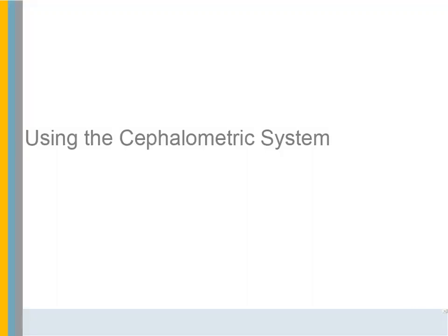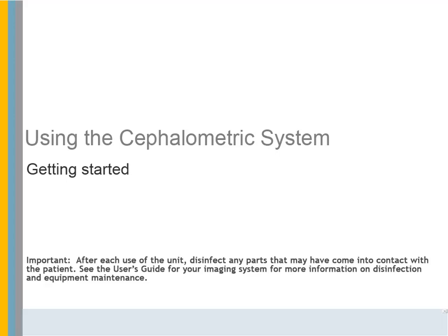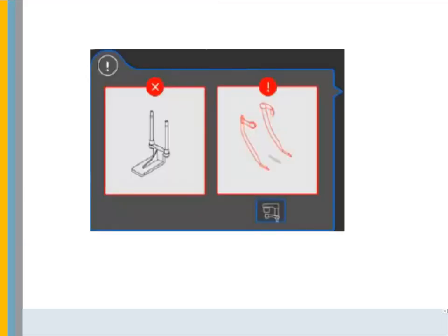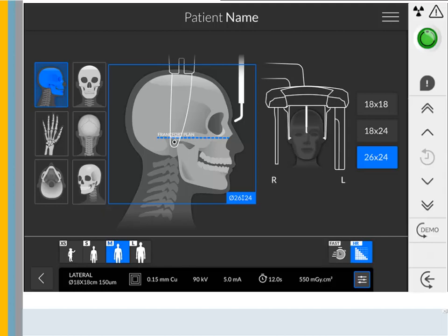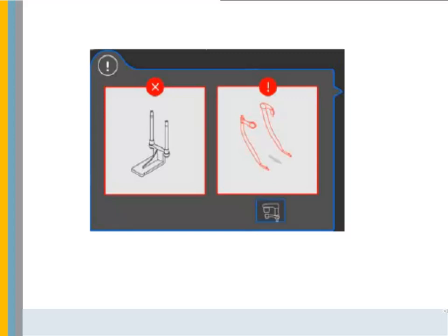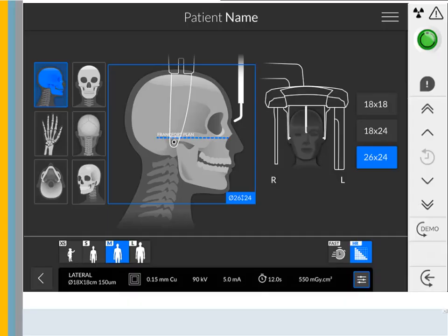Using the Cephalometric System — Getting Started. Important: after each use of the unit, disinfect any parts that may have come into contact with the patient. See the user's guide for your imaging system for more information on disinfection and equipment maintenance. After accessing the patient's record, click the Cephalometric icon to access the Cephalometric acquisition interface. On the touch screen control panel, press the patient entry icon to rotate the arm into position. On the fixed arm, remove any positioning accessory and lower the head clamps by pulling and turning them outwards. When the illustration disappears, the Cephalometric acquisition interface is ready for use.